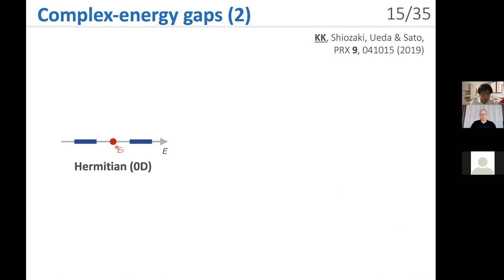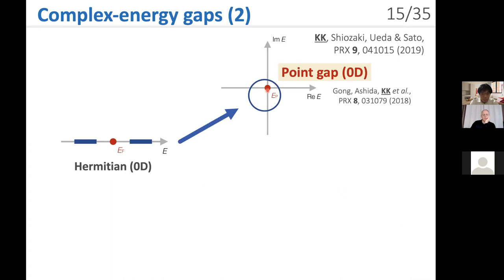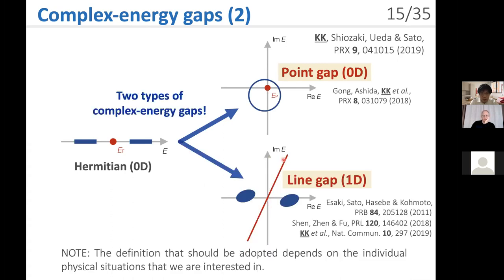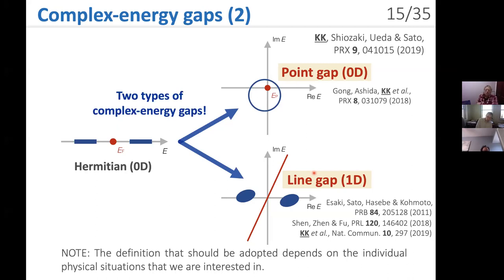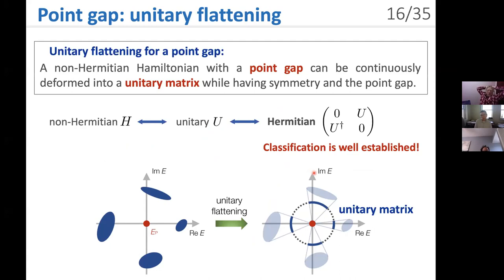In Hermitian systems, an energy point is relevant as an obstacle in the spectrum. But an energy point and also an energy line can be energy obstacles in the complex spectrum for non-Hermitian systems. We call these two types of complex energy gaps the point gap and the line gap. The definition that should be adopted depends on the individual physical situation. The nature of topological phases depends on the type of complex energy gap. For a point gap, a non-Hermitian Hamiltonian with a point gap can be continuously deformed into a unitary matrix while maintaining symmetry and the point gap, so the classification reduces to the well-established problem of classifying unitary matrices. On the other hand, for a line gap, a non-Hermitian Hamiltonian can be continuously deformed into a Hermitian matrix while maintaining symmetry and the line gap, so the classification reduces to the well-established problem of classifying Hermitian matrices.